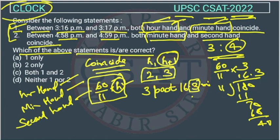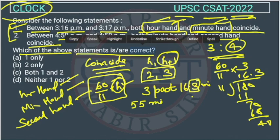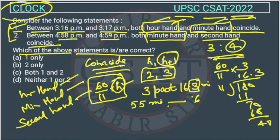There is one another method you can use. That method is of relative speed. You know that the hour hand gains 55 minutes in 60 minutes. So it will gain 1 minute in 60 upon 55.